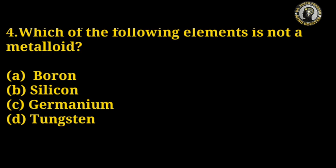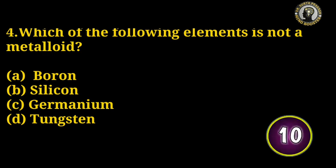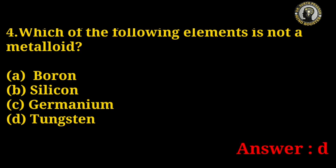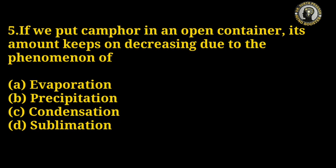Options for question 4: boron, silicon, germanium, tungsten. The right answer is D — tungsten. Question number 5: If we put camphor in an open container, its amount keeps on decreasing due to the phenomenon of which process?